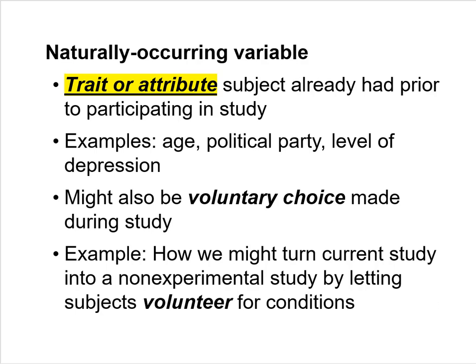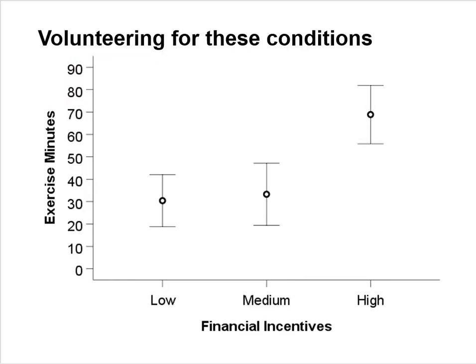A naturally occurring variable can also be a voluntary choice made during the course of the investigation. For example, we could turn our current study into a non-experimental study by letting subjects volunteer for treatment conditions — I'll show you the same figure again to illustrate this idea.